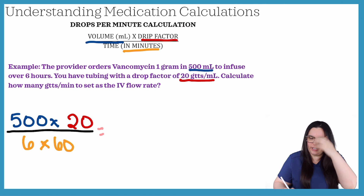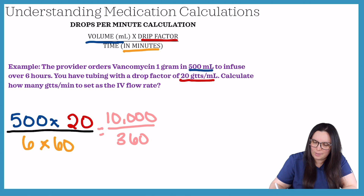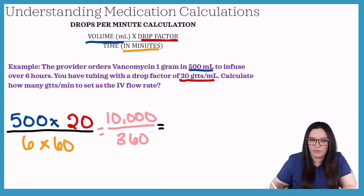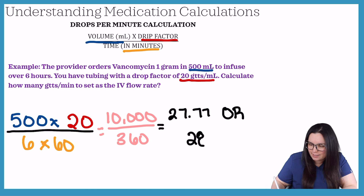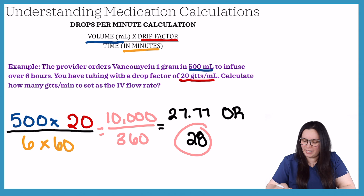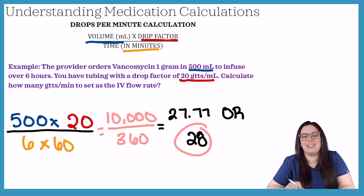Based on our multiplication, we get 10,000 over 360 minutes. Continuing with our division, we get 27.77, or 28 drops when we round up. The correct answer is 28 or 27.77, depending on what your dosage calculation exam is asking.